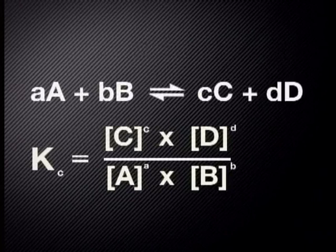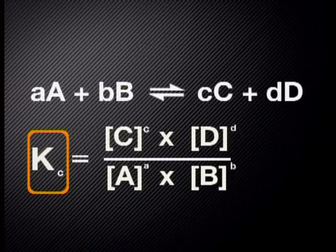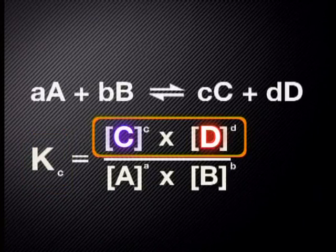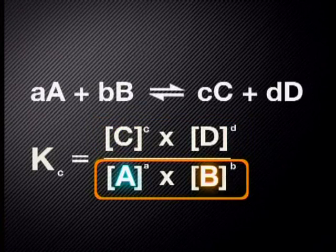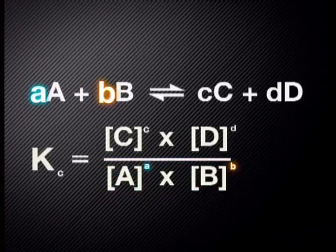It looks quite complex, but we can simplify it. Firstly, notice that Kc is a special ratio. On the numerator, we have the concentration of the products C and D multiplied together. In the denominator, we see the concentration of the reactants A and B multiplied together. Secondly, notice that the values in front of each product and reactant are used as exponents in the expression. We can use this general expression to write down the equilibrium constant for specific reactions.